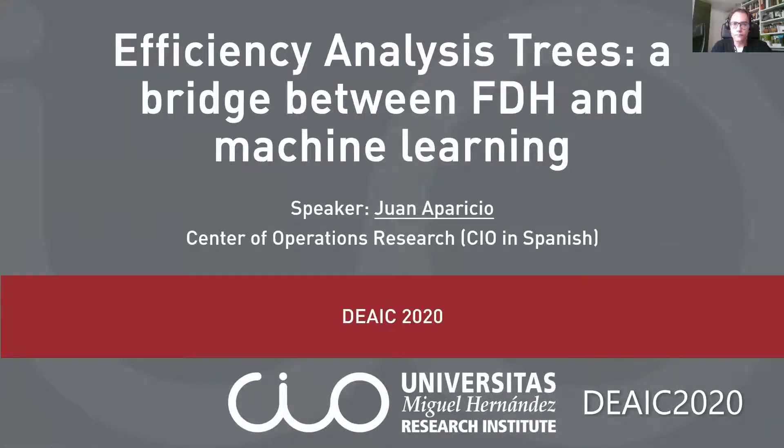I'm Juan Aparicio from the University of Miguel Hernández of Elche at the Center of Operations Research. The title of this paper is Efficiency Analysis Trees, A Bridge Between FDH and Machine Learning. This paper has also been written by PhD student Miriam Esteve and my colleagues Alejandro Rabasa and Jesús Javier Rodríguez-Sala.